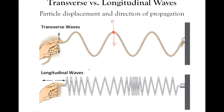Longitudinal waves are different. To think of a longitudinal wave, imagine a spring or slinky attached to a wall. If you move your hand in the lateral direction, you get a longitudinal wave. A particle sitting on one part of that spring would move in that same lateral direction, with no vertical component. That's the fundamental difference between transverse and longitudinal waves.